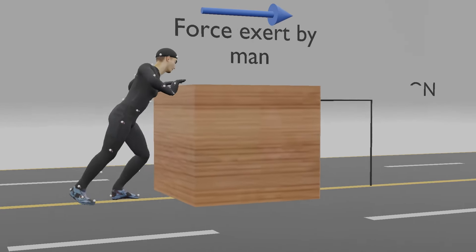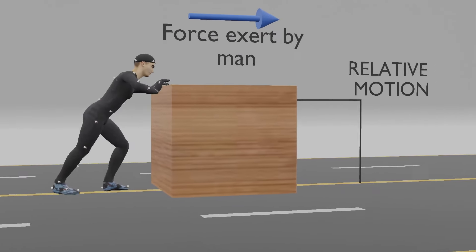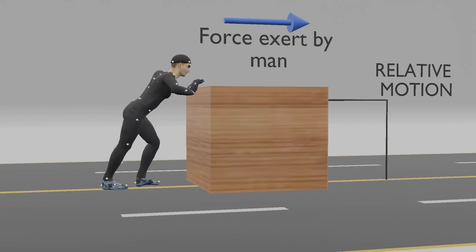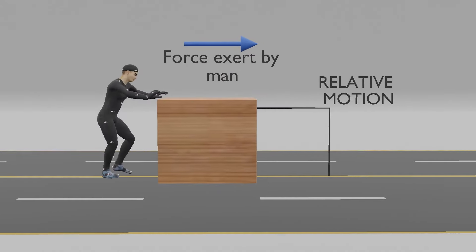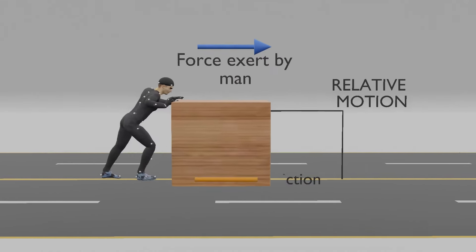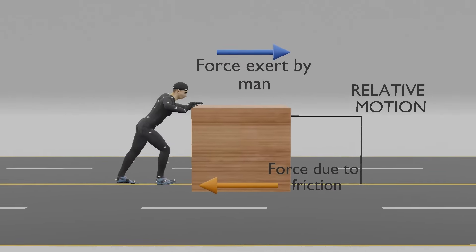As the man pushes the block of wood, there is relative motion between the block and surface of the road. Due to this relative motion, an opposite force comes into play which restricts the motion of the wood block.